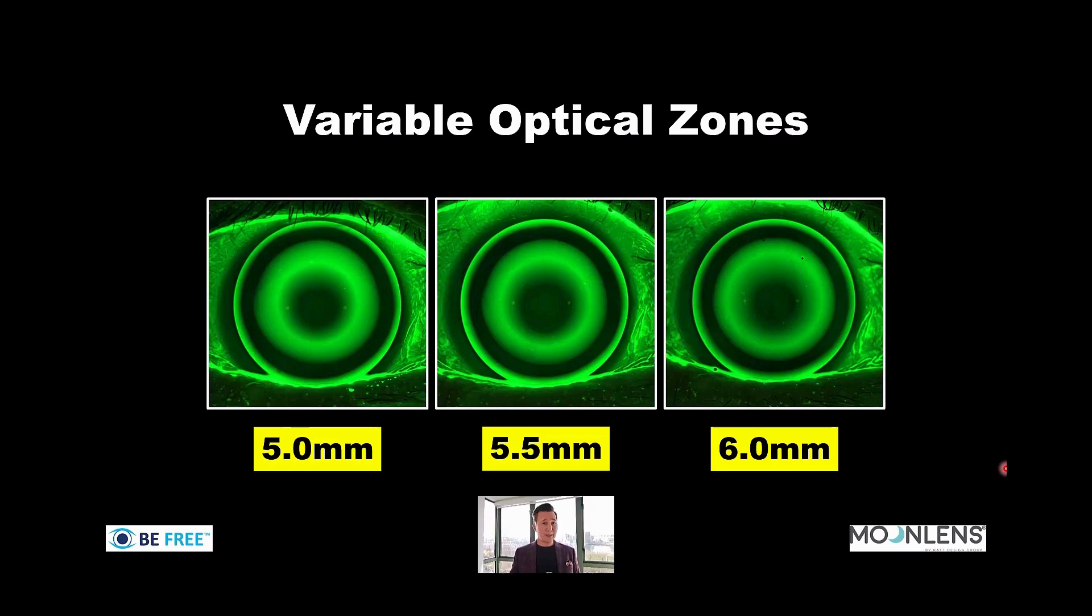So by using smaller optic zones, that's often a way that we can manipulate the epithelium with a bit more control. So that would be something we might try as well. Not go with a six millimeter optic zone, but use a 5.5 millimeter.